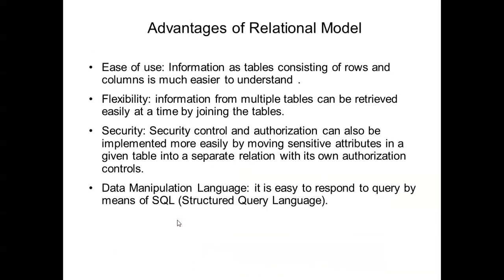Now we have seen the different concepts or terms of the relational model. Now we will see the advantages. First, it is easy to use — it has a tabular form structure consisting of rows and columns, so it is easy to understand. Second, flexibility: in the relational model, information from multiple tables can be retrieved easily at a time by joining the tables, making it flexible to connect two tables and get more data.